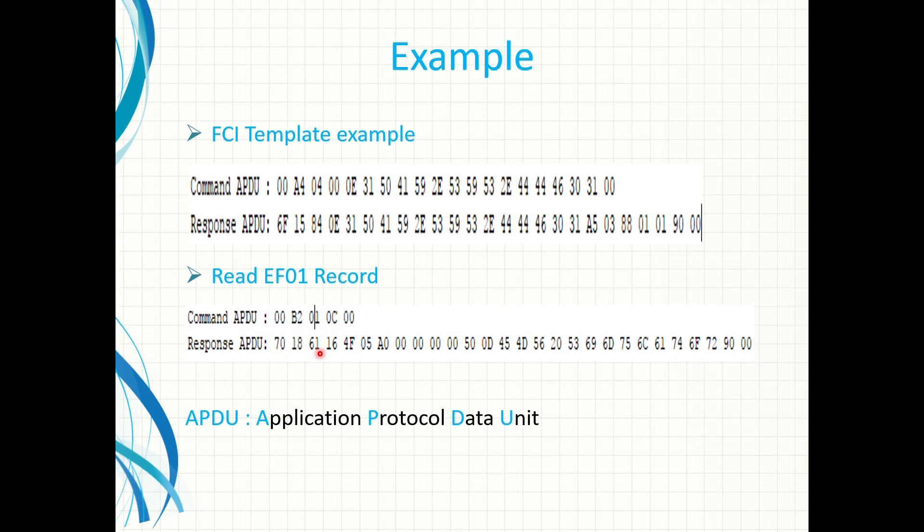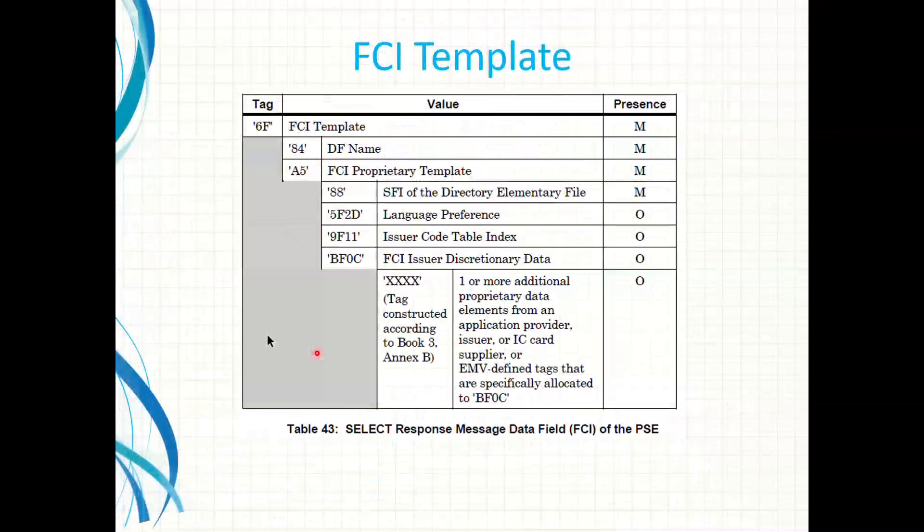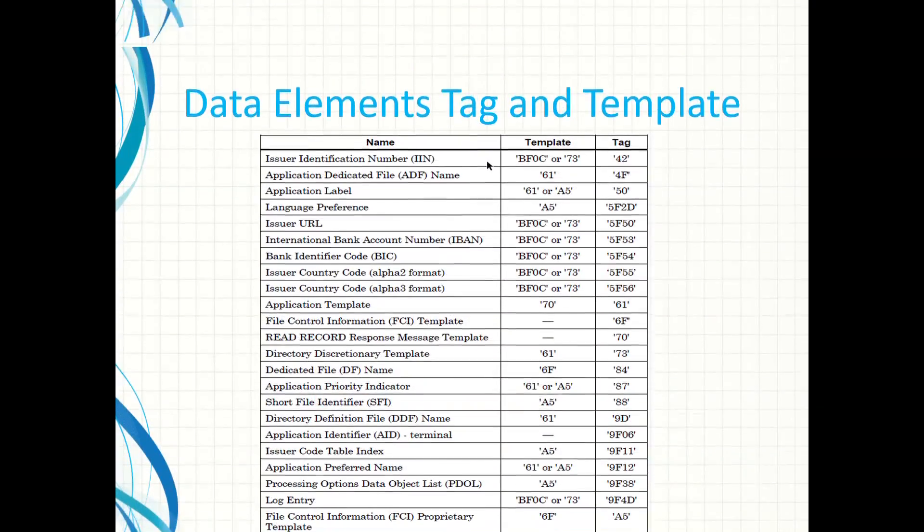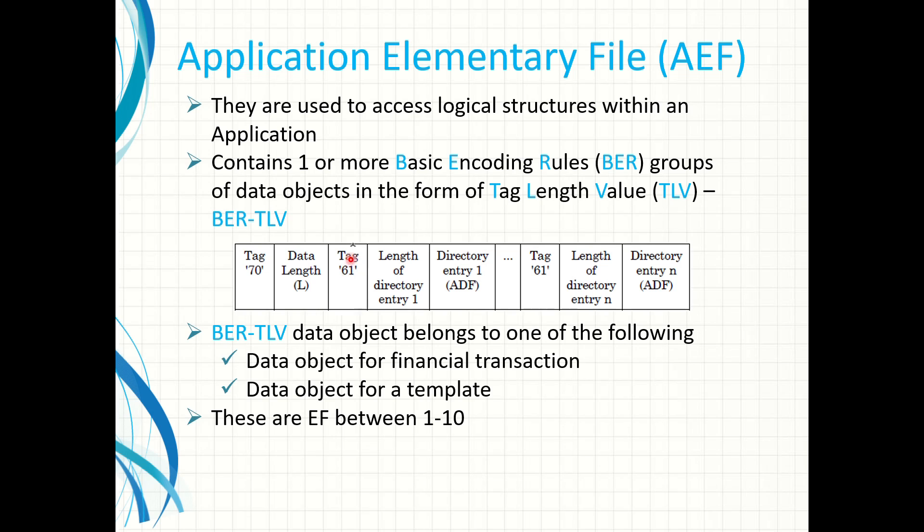So in this example it has a length of 18 hex and that is 24 in decimal. So counting the 24 is the same thing as above. It ends here and the last two bytes are the status bytes. So the next tag is a 61 tag and that is this one.